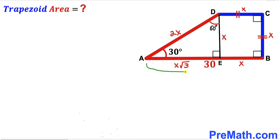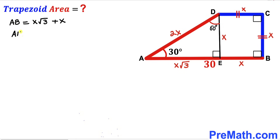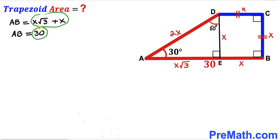We observe that the whole base AB is the sum of two individual segments: x√3 and x. So AB = x√3 + x. We also know AB = 30 units. Comparing these two equations, we can equate the right-hand sides: x√3 + x = 30.